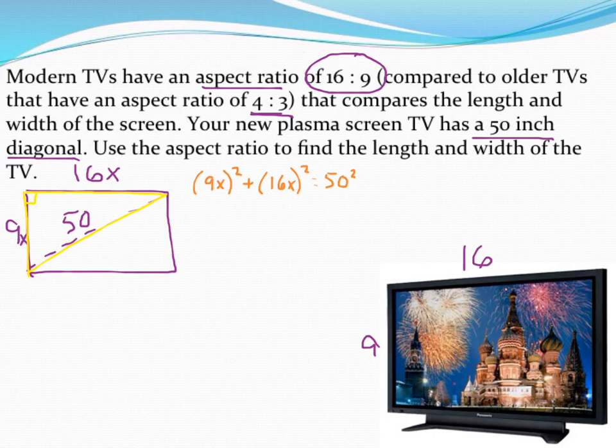When I go ahead and do 9X squared, I have to make sure I do 9X times 9X. In other words, 9 times 9 gets me 81, and X times X gets me X squared. I've got to do both parts of that. Similarly with the next piece, 16 times 16 is 256. And then X times X is X squared. And finally, 50 squared gets me 2,500.